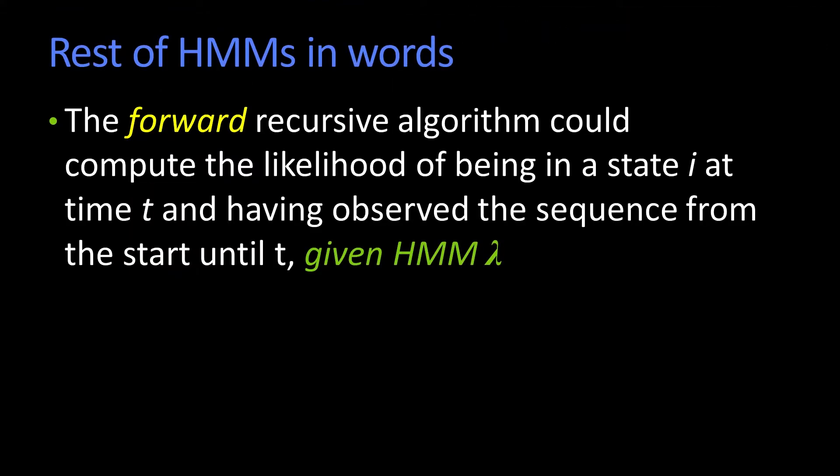The forward recursive algorithm that I just showed you can compute the likelihood of being in state i at time t and having seen all the observations up to time t, given that you have the HMM lambda.